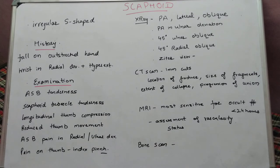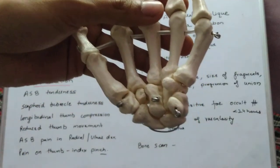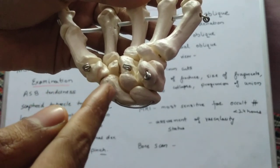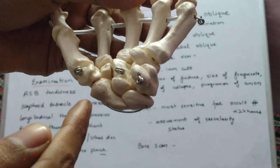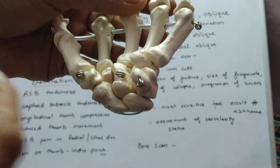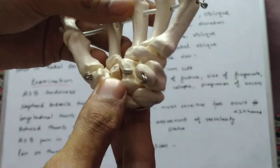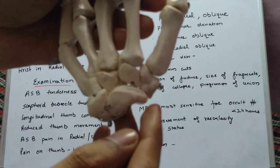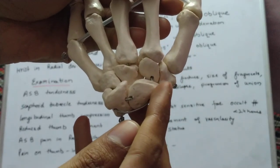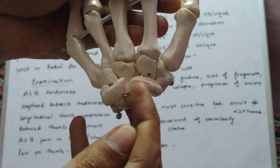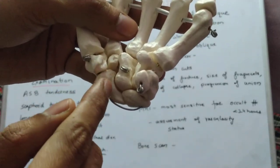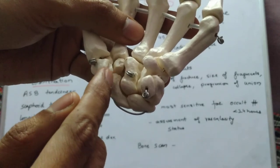To revise the introduction to scaphoid fracture: the scaphoid has a distal pole, proximal pole, and waist, with a tuberosity in the distal region. Vascular supply is mostly over the dorsal aspect, where the dorsal carpal branch of the radial artery supplies 80 percent of the proximal part. Over the volar aspect, the superficial palmar branch supplies the remaining 20 percent and the distal part of the scaphoid bone.